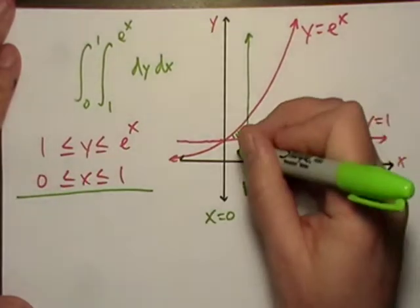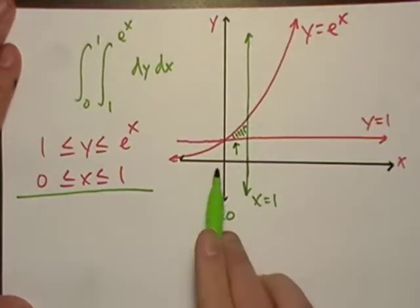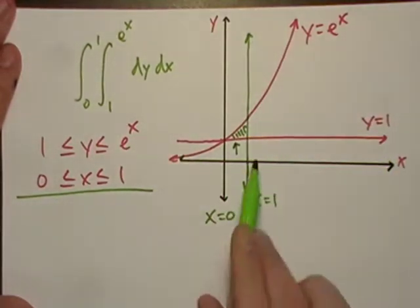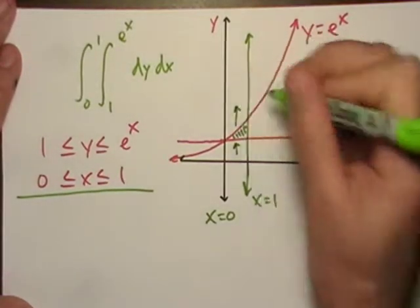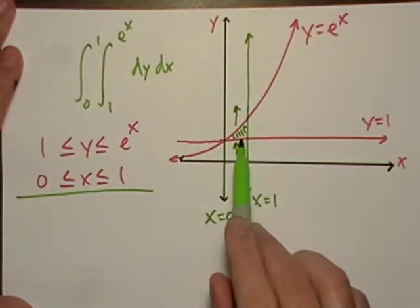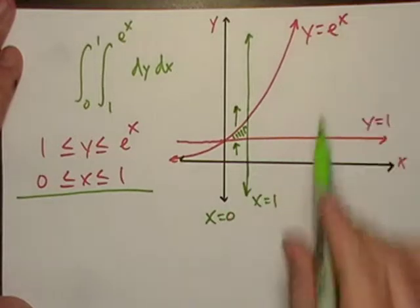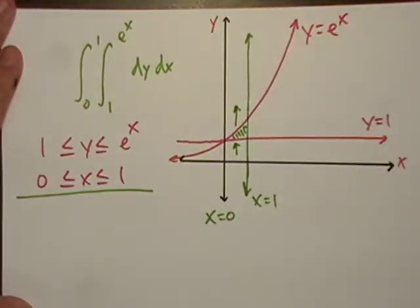With respect to y, this region begins to exist at y equals 1, the function y equals 1. Okay, it ceases to exist once we pass the function y equals e to the x.